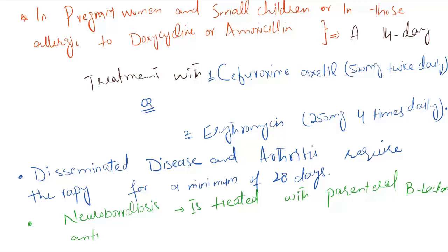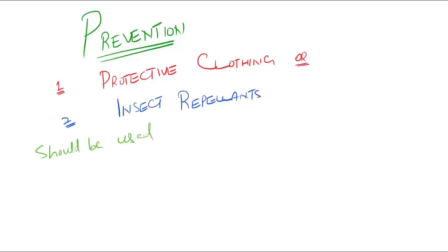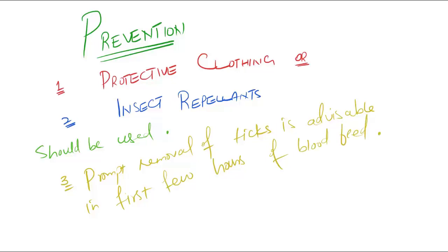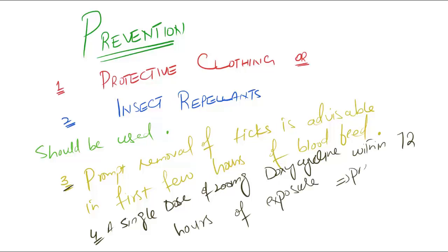How can we prevent Lyme disease? Protective clothing and insect repellents should be used in tick-infested areas. Prompt removal of ticks is advisable in the first few hours of a blood feed, as the risk of Borrelia transmission is lower in the first few hours. A single dose of 200 mg doxycycline within 72 hours of exposure also prevents erythema migrans from developing.